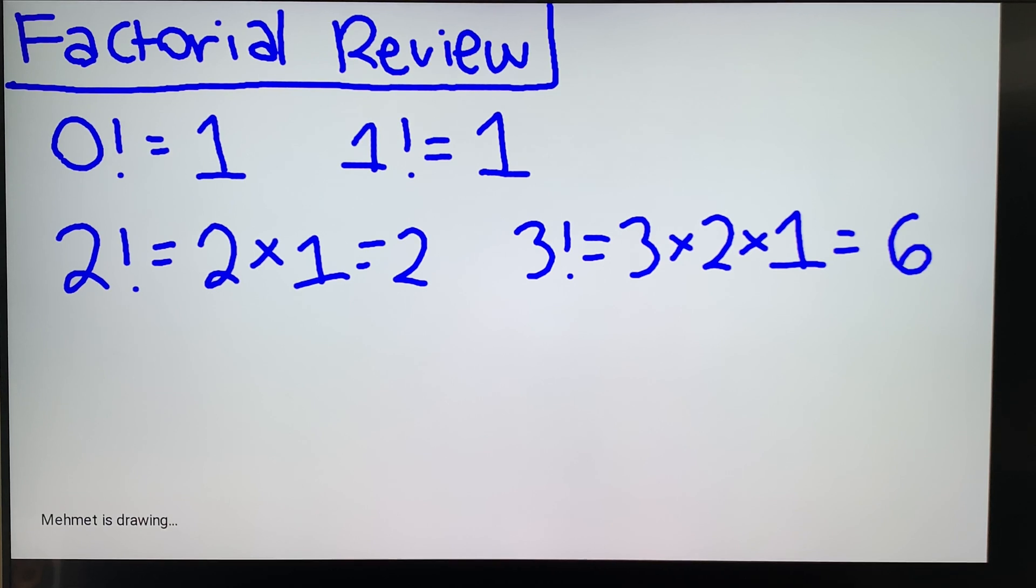4 factorial is 4 times 3 times 2, and then there's the 1 there but it doesn't really matter, so 24. And then as you see the pattern, you multiply by the integers that are less than the number you have.